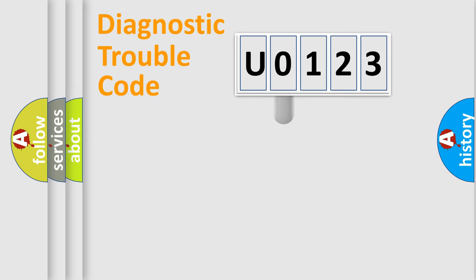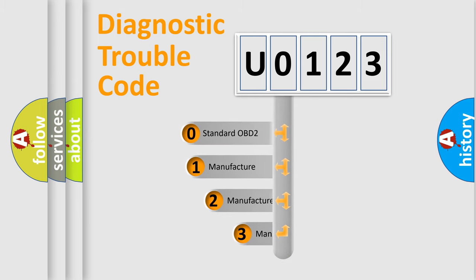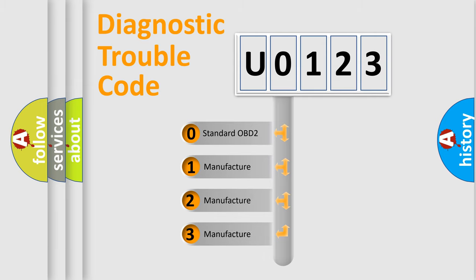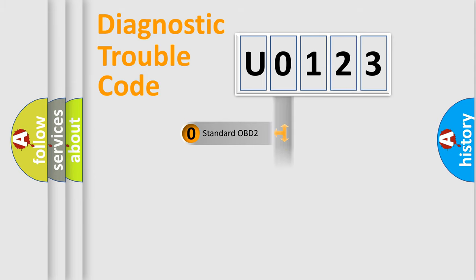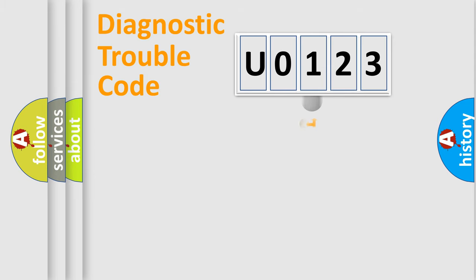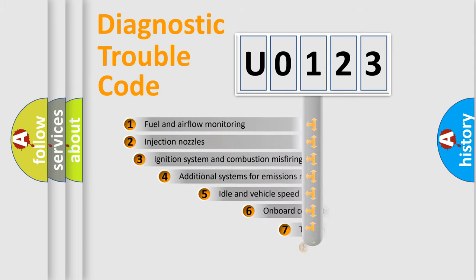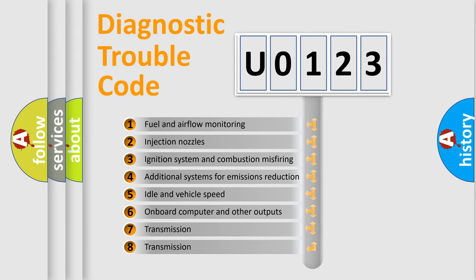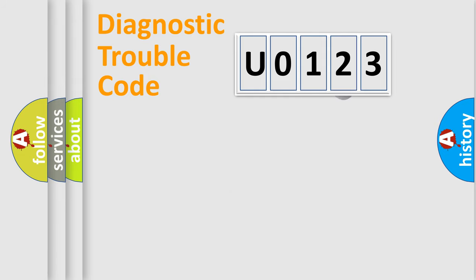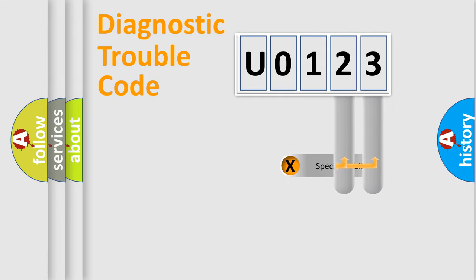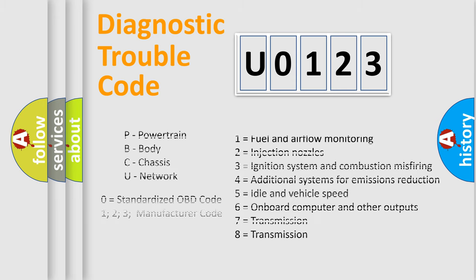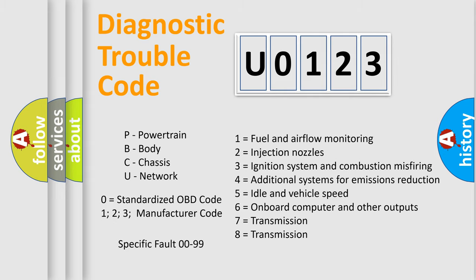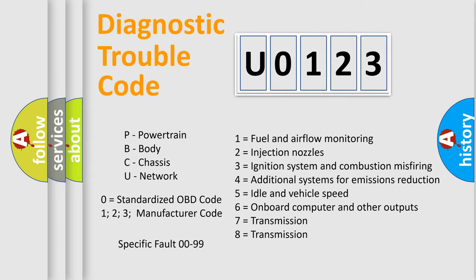This distribution is defined in the first character of the code. If the second character is expressed as zero, it is a standardized error. In the case of numbers 1, 2, or 3, it is a more specific expression of the car-specific error. The third character specifies a subset of errors. Only the last two characters define the specific fault of the group. This division is valid only if the second character code is expressed by the number zero.